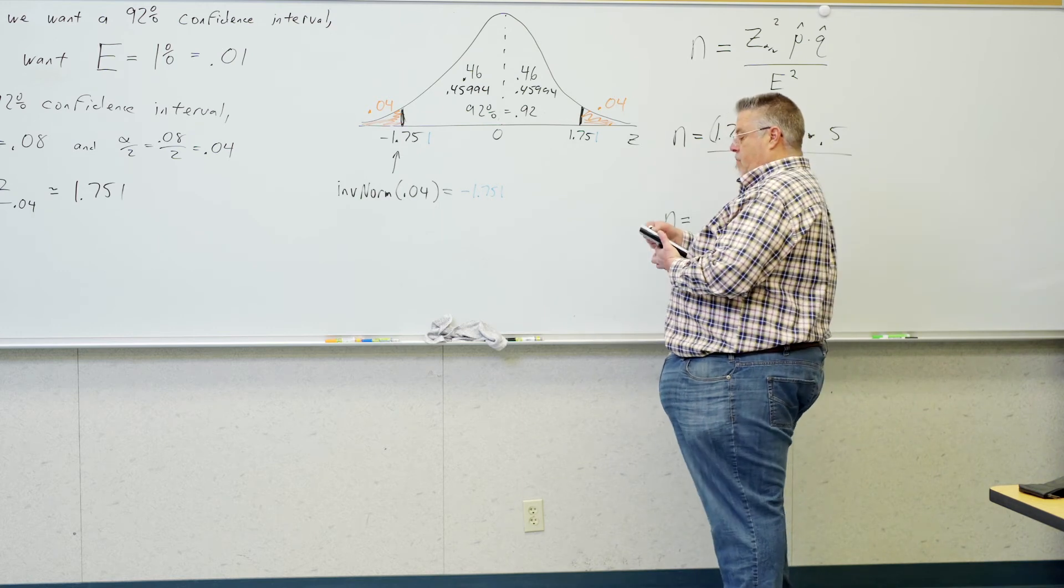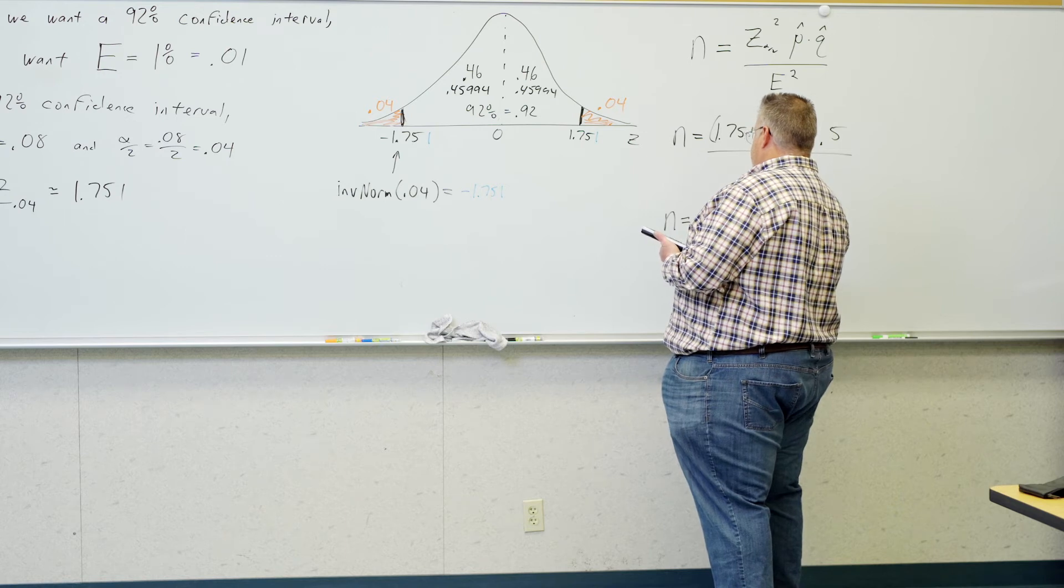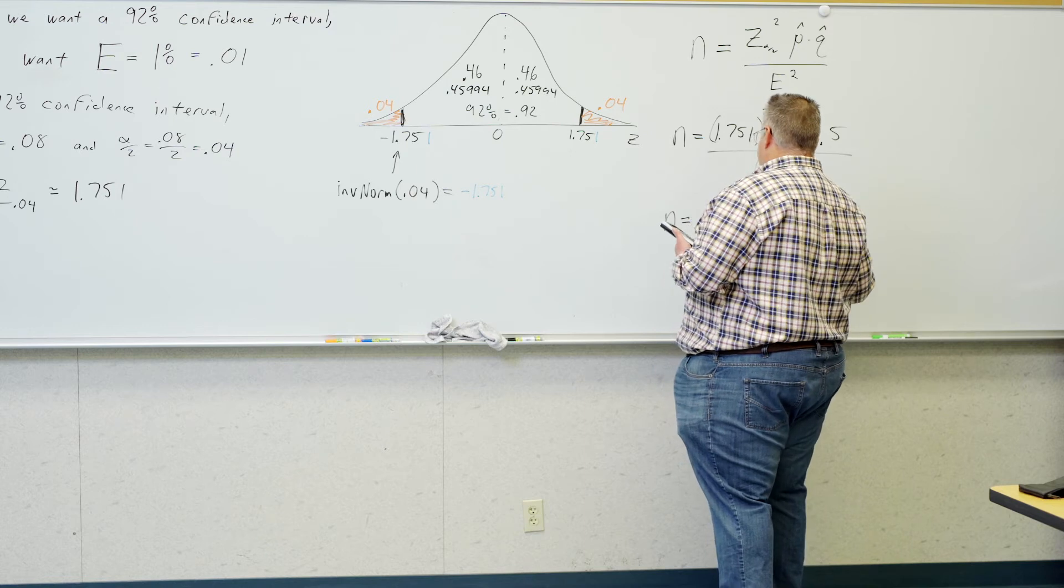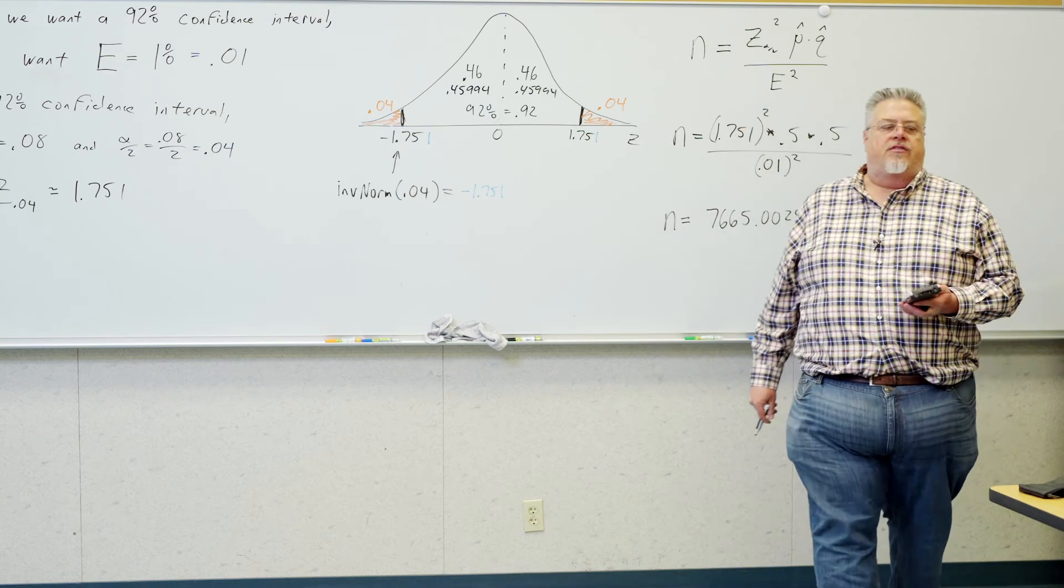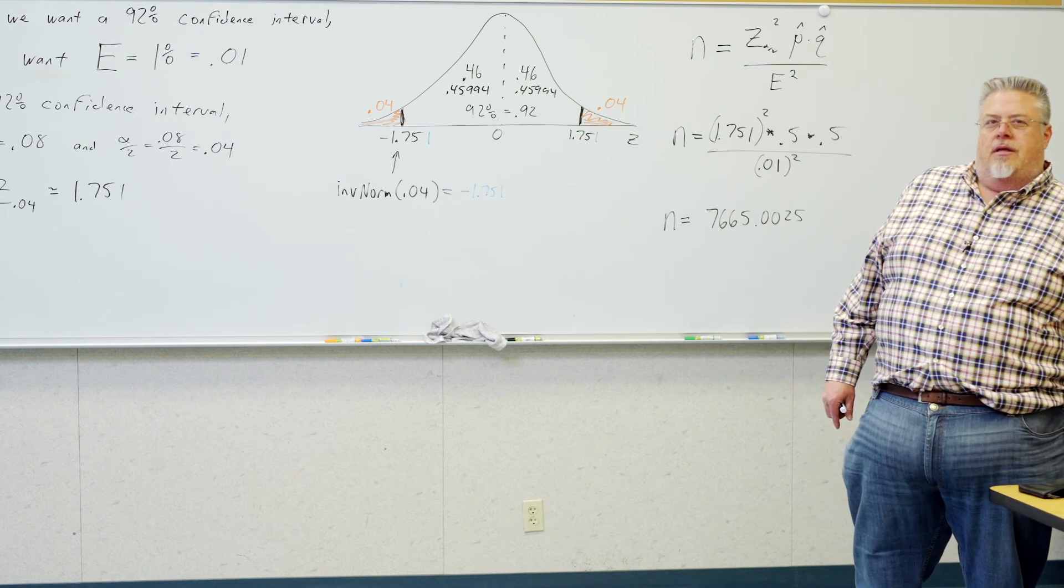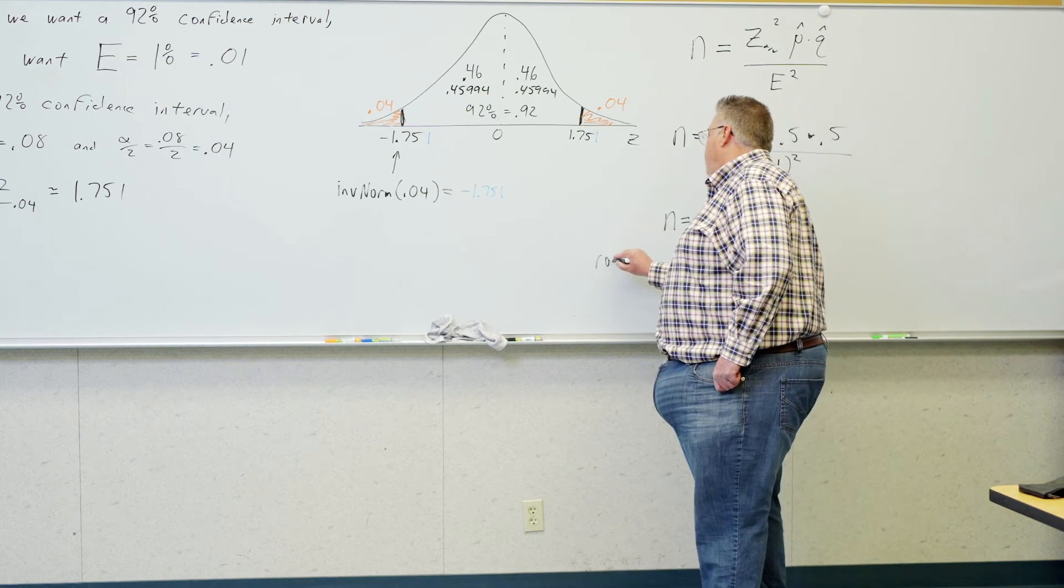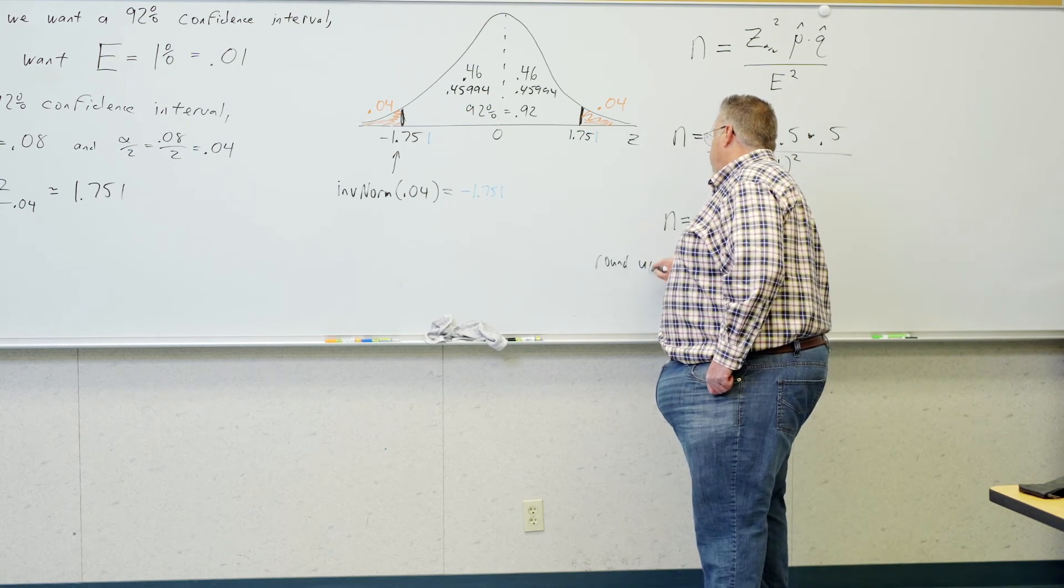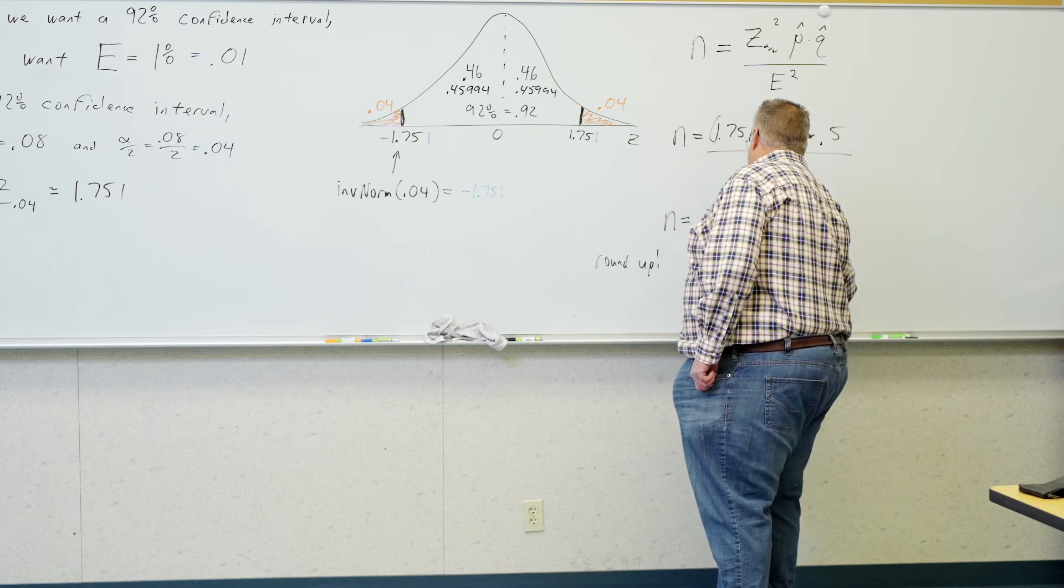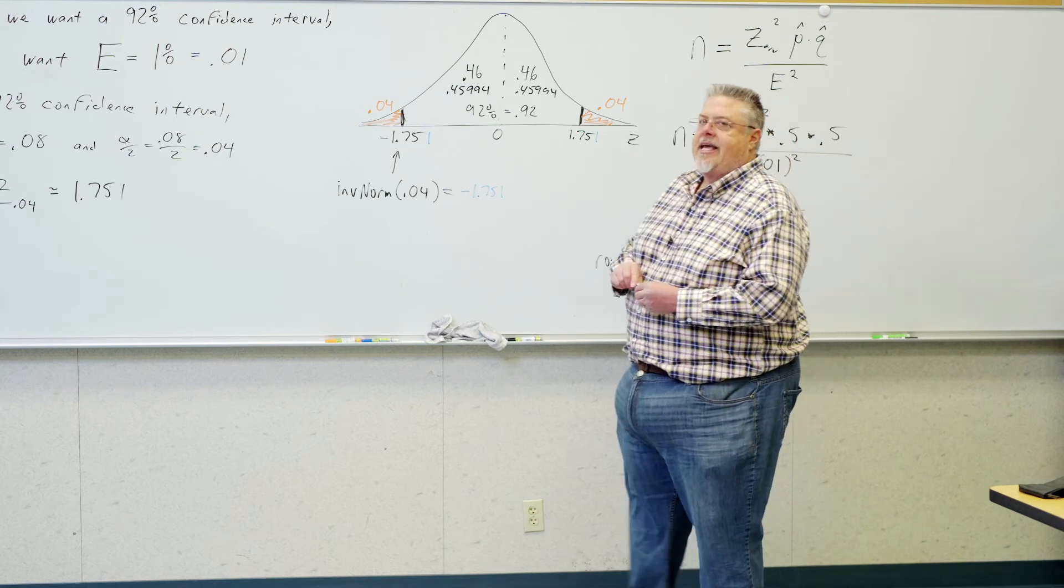So, what am I going to have for n here? I'm going to have 1.751 squared times 0.5 times 0.5 over error I said was 0.01. That's going to be squared. And we get n of, wow, this is close. I'm getting 7665.0025. Now, even though that's very, very close to 7665, we're always going to round up to the next decimal for reasons I'll explain in a second. So, here's how big our sample size has to be.